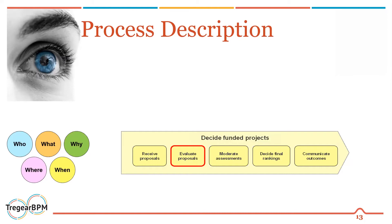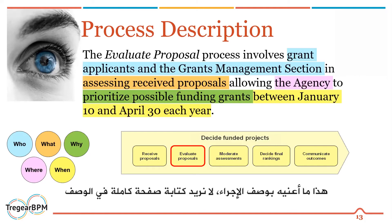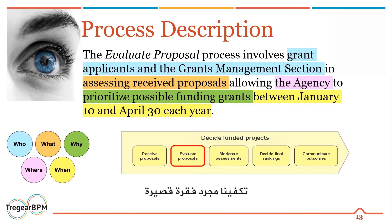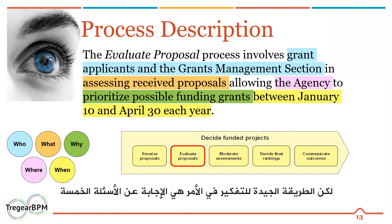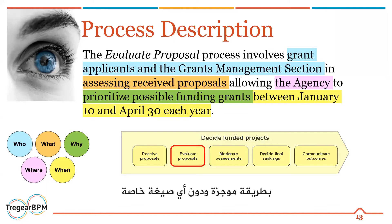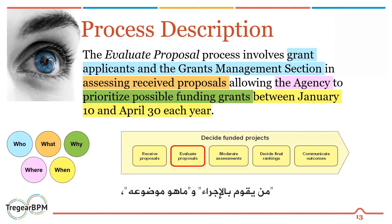Here is an example — a process where we're evaluating some proposals that have been received. This is what I mean by a process description. We don't want to write a full page about it, just a short paragraph. A good way to think about it is those five W's: in brief form, just make sure we've covered who does this, what it's about, why it's important, where it's done, and when it's done.